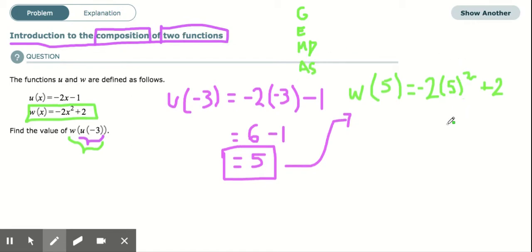There's nothing grouped, nothing in the parentheses besides the 5. So you do 5 squared for exponents. That'll give you 25.